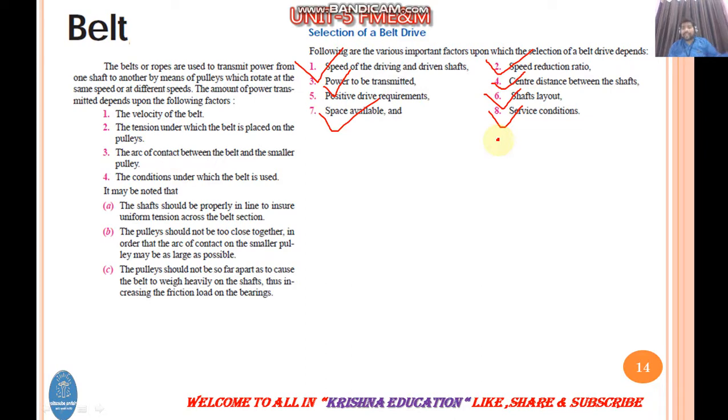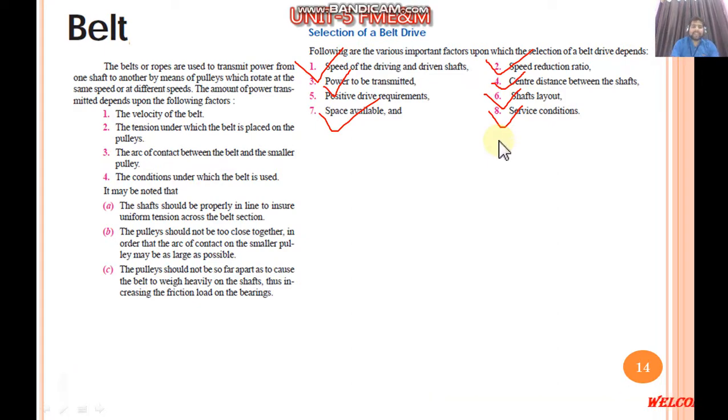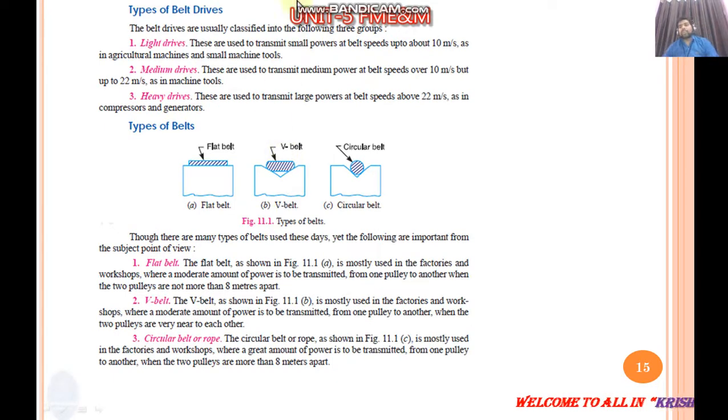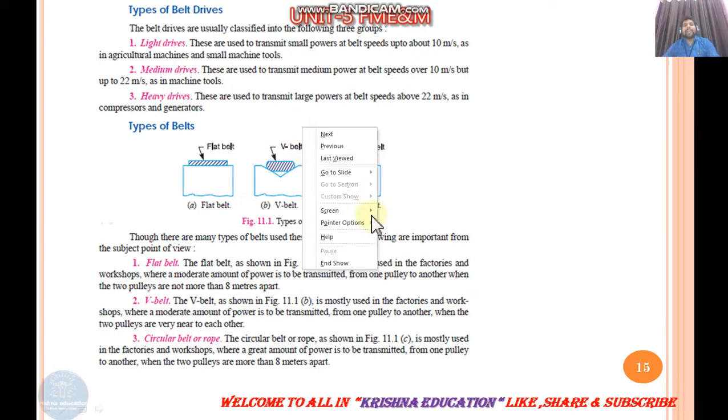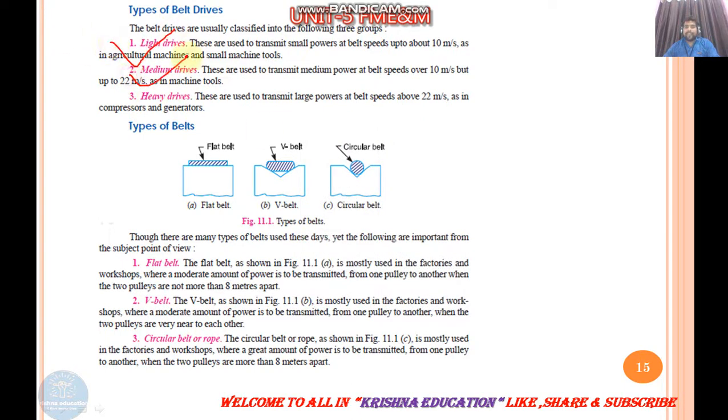Speed of driver and driven shaft, speed reduction - how much speed needs to be reduced, power to be transmitted, center distance between shafts, space layout, shaft layout - whether parallel or inclined, and space conditions. Based on these factors, you select the belt from the market. Belt drives are available in three types based on usage in the market.